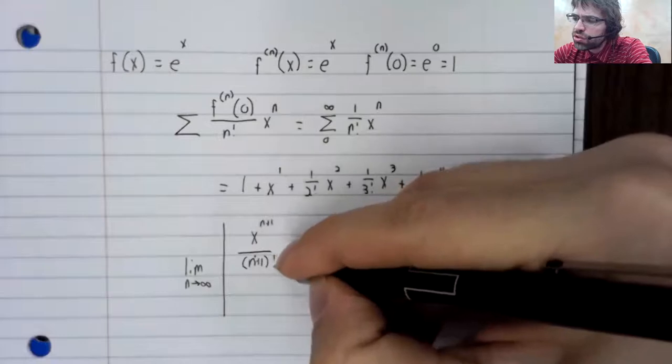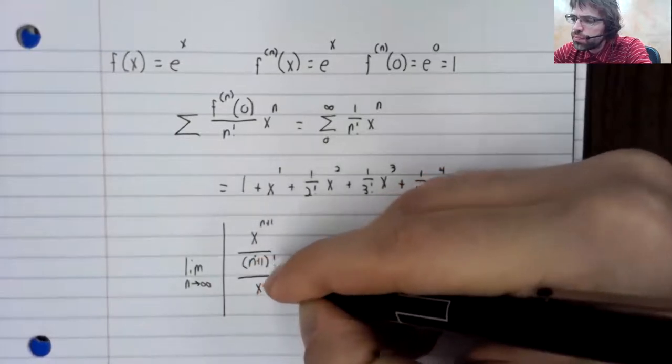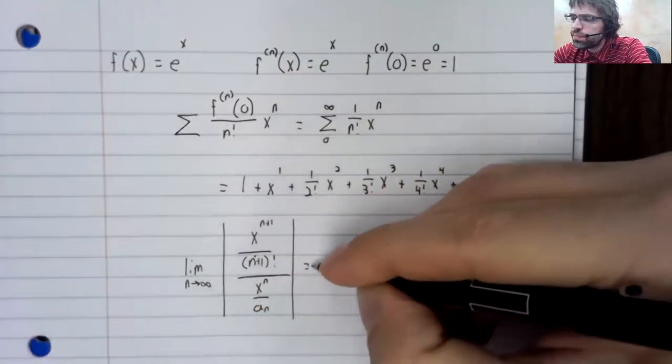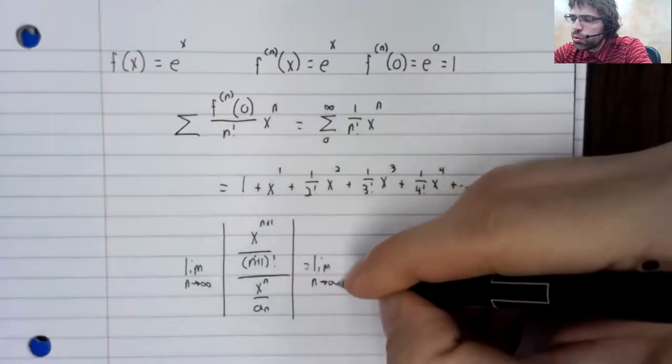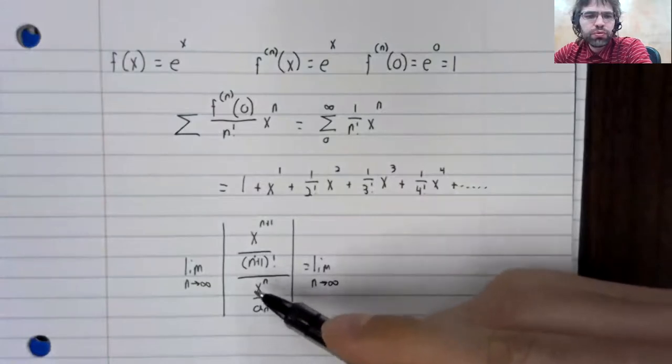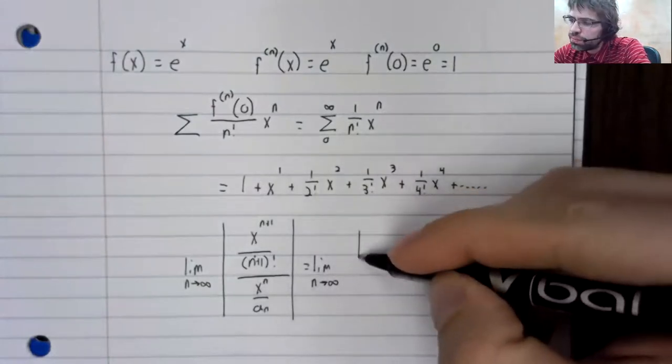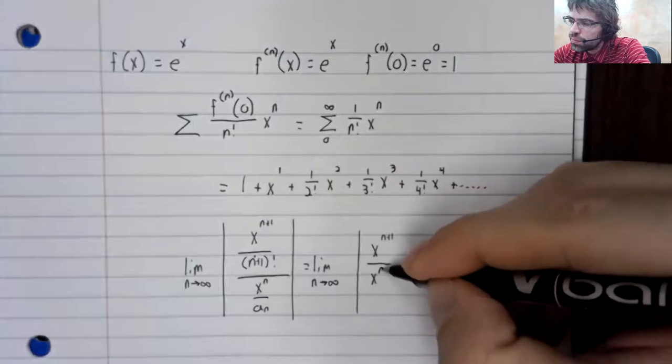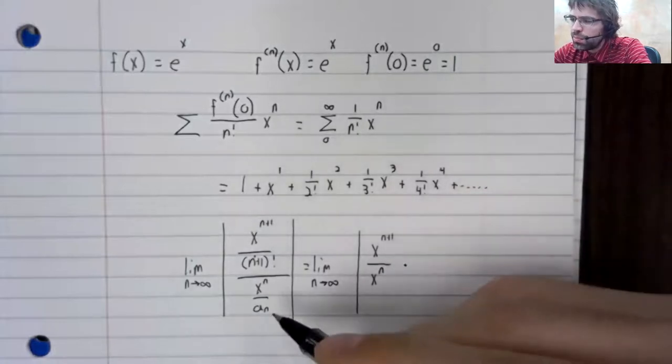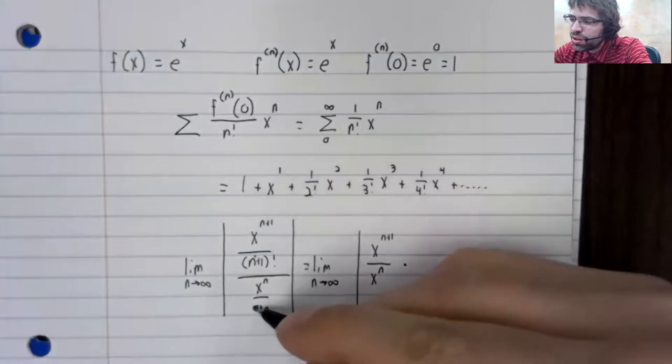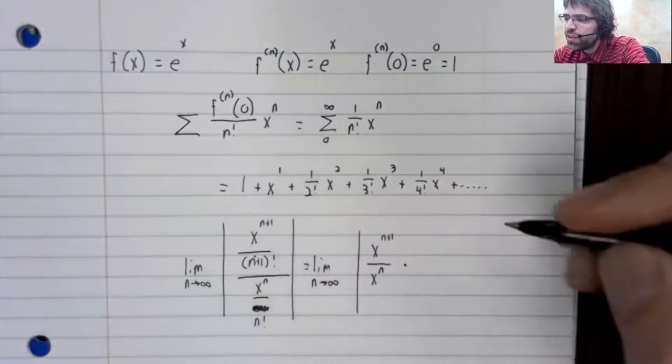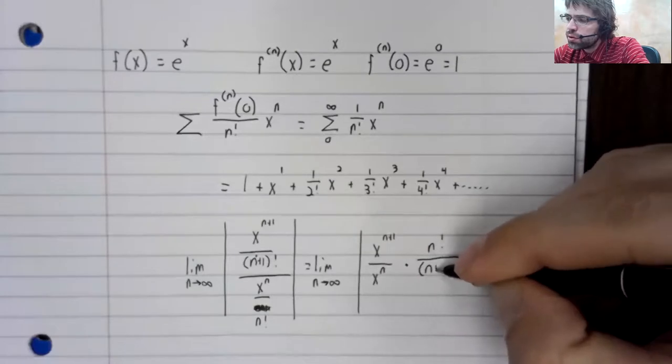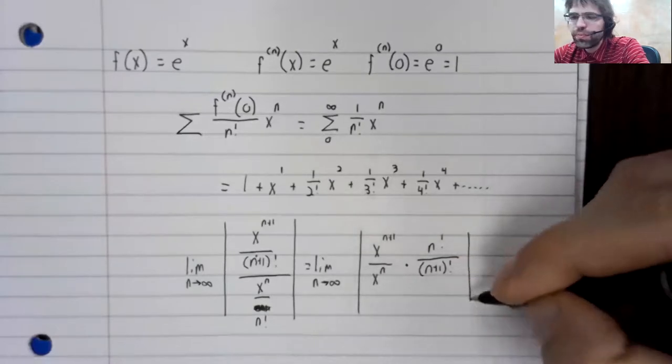Here's a sub n plus one over a sub n. We'll multiply top and bottom by the reciprocal of this thing. It's obviously a bit of an error there. So this is n factorial over n plus one factorial.